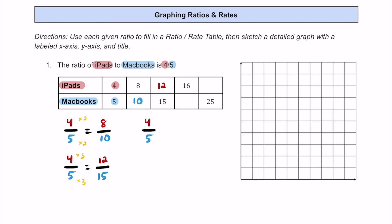Using this ratio again — 4 to 5 — but this time we have 16 iPads on top, and we need to find the MacBooks on the bottom. On top, 4 times 4 is 16, so if we quadruple the iPads we should quadruple the MacBooks. 5 times 4 is 20, giving us the ratio 16 to 20. So for every 16 iPads, there should be 20 MacBooks.